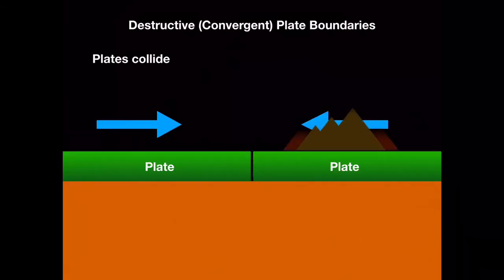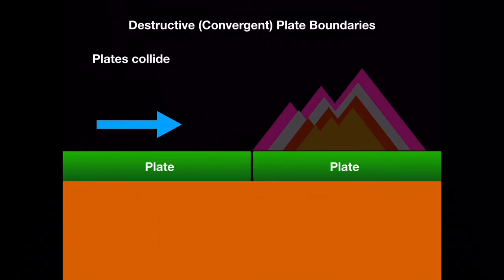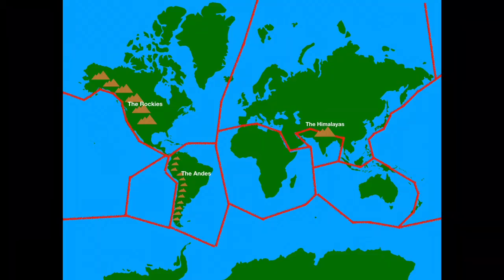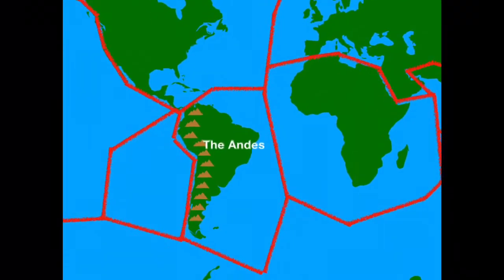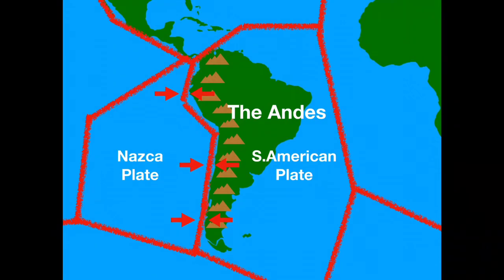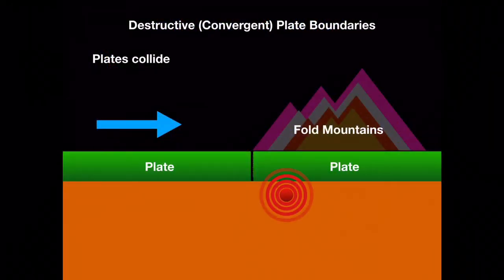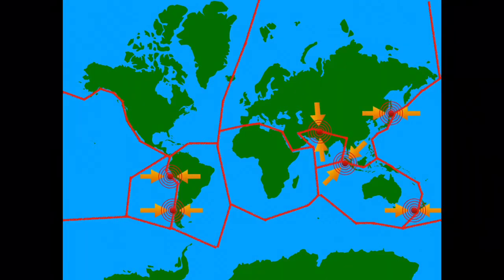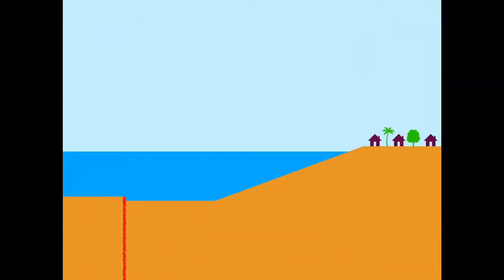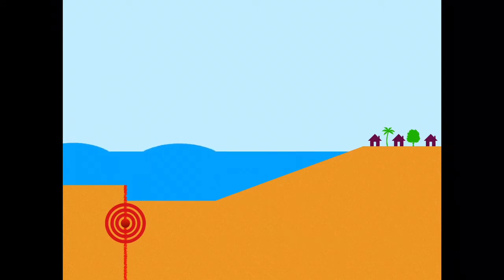As plates collide, they may also buckle and fold to form fold mountains. Examples of fold mountains include the Rockies in North America, the Himalayas in Asia, and the Andes in South America. The Andes run the length of South America along the destructive boundary where the South American and Nazca plates collide. Many of the largest earthquakes occur along destructive boundaries, such as in Japan in 2011 and Indonesia in 2004. Both earthquakes occurred under the ocean and generated tsunamis, resulting in massive human casualties and widespread destruction.